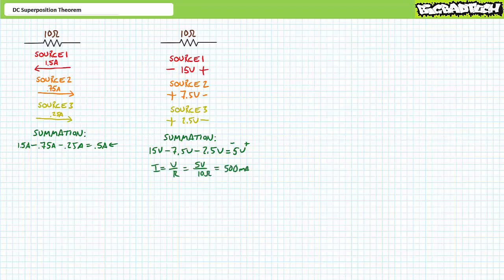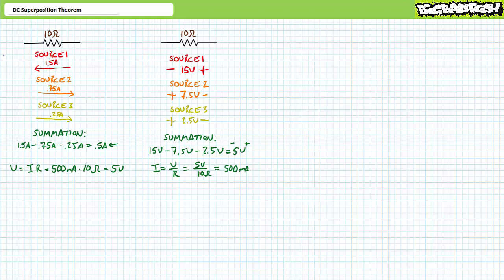Ohm's law demonstrates a 5 volt drop positive to negative right to left across a 10 ohm resistor would induce 0.5 amps of current traveling right to left. Similarly, a 10 ohm resistor experiencing 0.5 amps traveling right to left would experience a 5 volt drop positive to negative right to left. This suggests that voltage and current summations should be supportive of one another, and there exist ample opportunities to check your work via Ohm's law, Kirchhoff's current law, and Kirchhoff's voltage law.